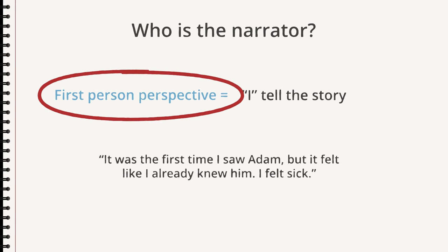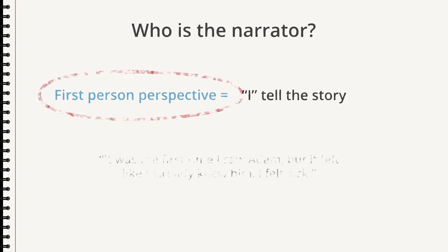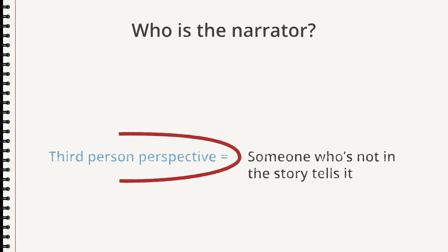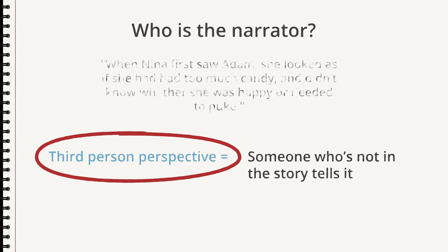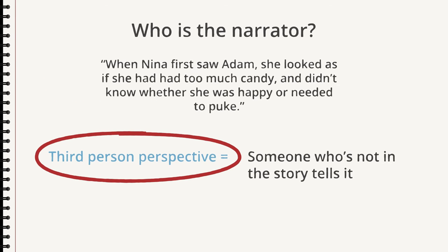First person: 'It was the first time I saw Adam, but it felt like I already knew him. I felt sick.' And third person: 'When Nina first saw Adam, she looked as if she had had too much candy and didn't know whether she was happy or needed to puke.'